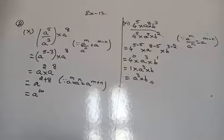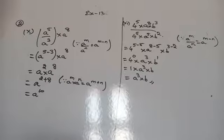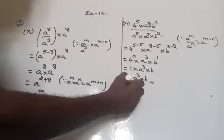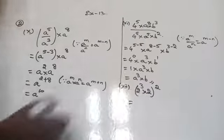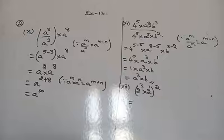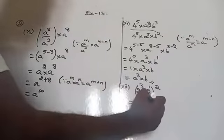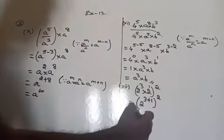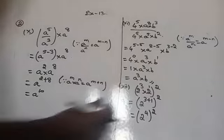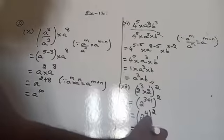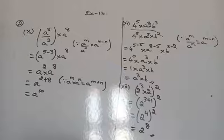Now look at the 12th subdivision: 2 power 3 into 2, the whole square. Every number has the power 1, so 2 is 2 to the power 1. It is in the form of a^m into a^n, so you write a to the power m plus n — that is 2 to the power 3 plus 1, the whole square, which is 2 to the power 4, the whole square. Then in the form of (a^m)^n equals a to the power m×n, so 2 to the power 4 times 2 gives 2 to the power 8.